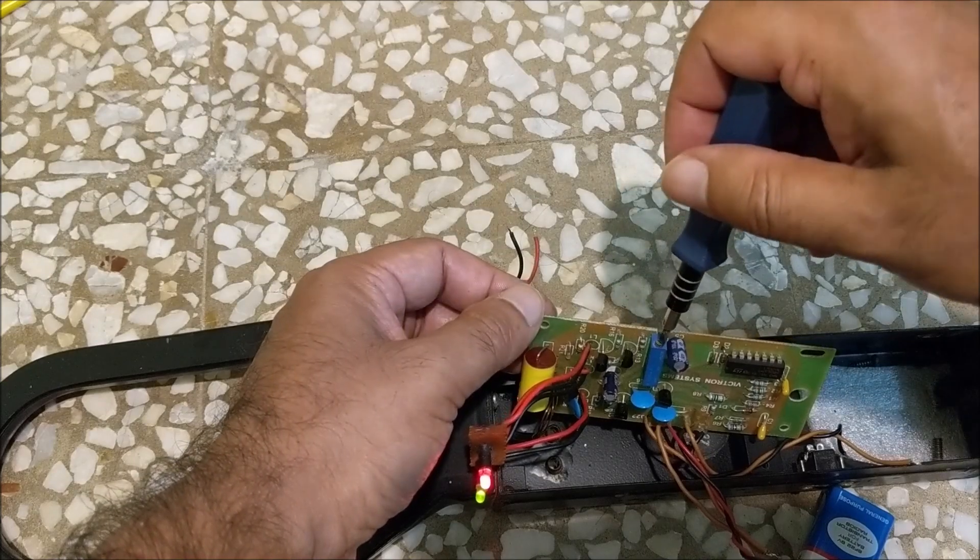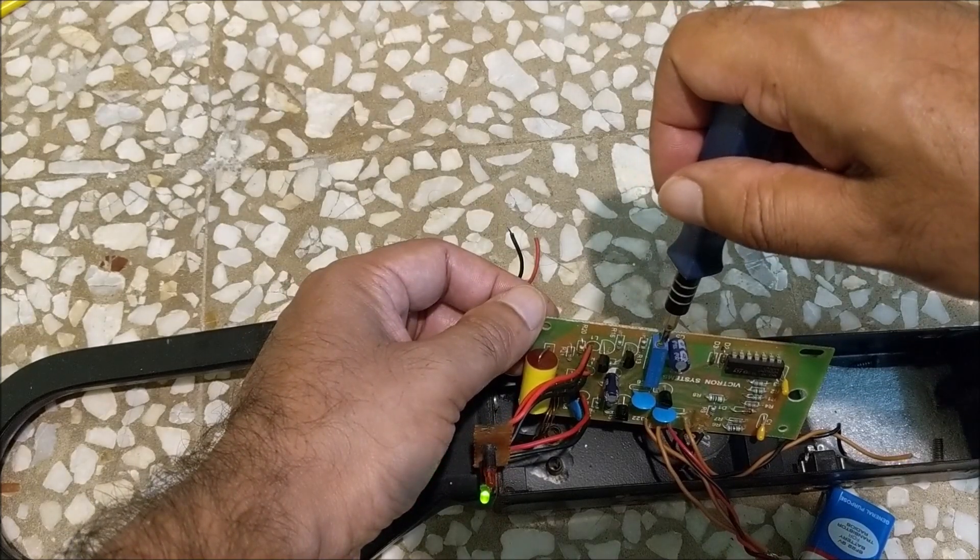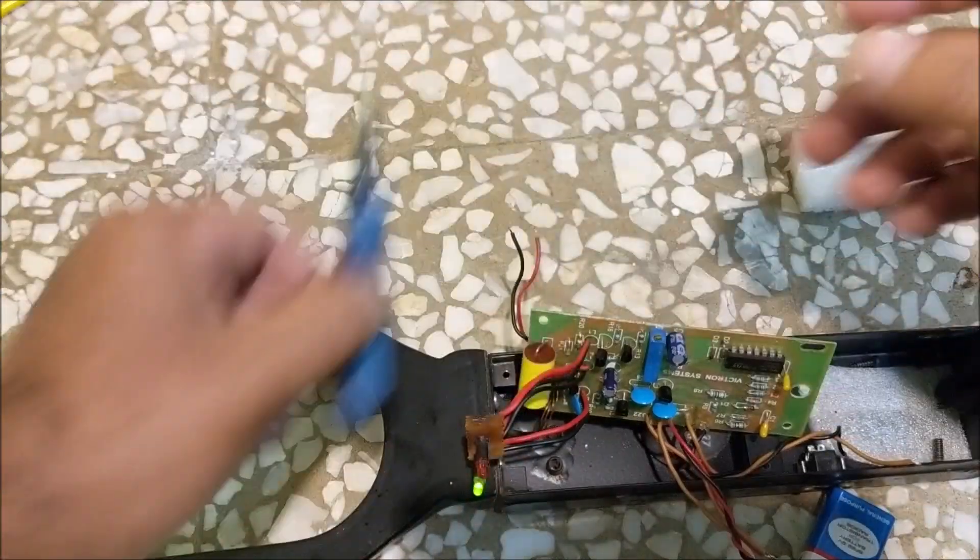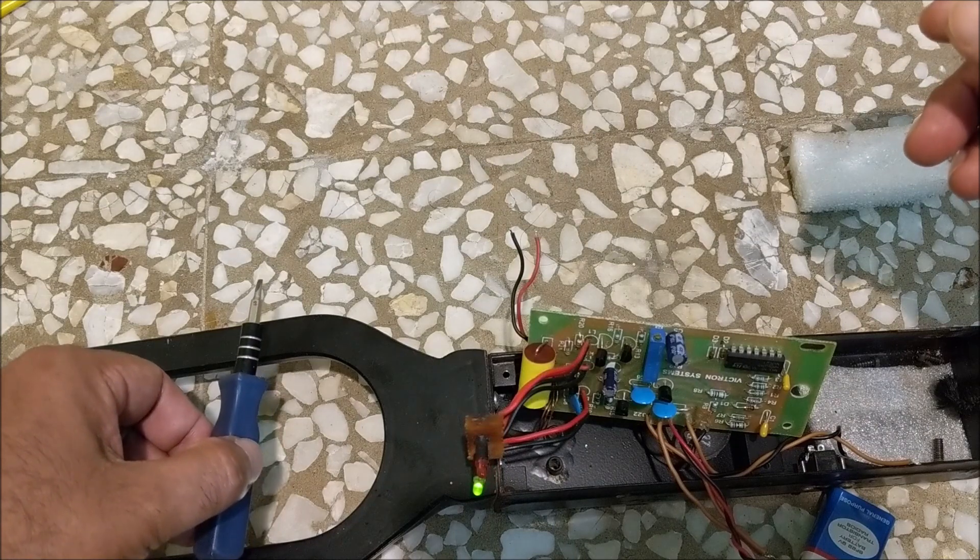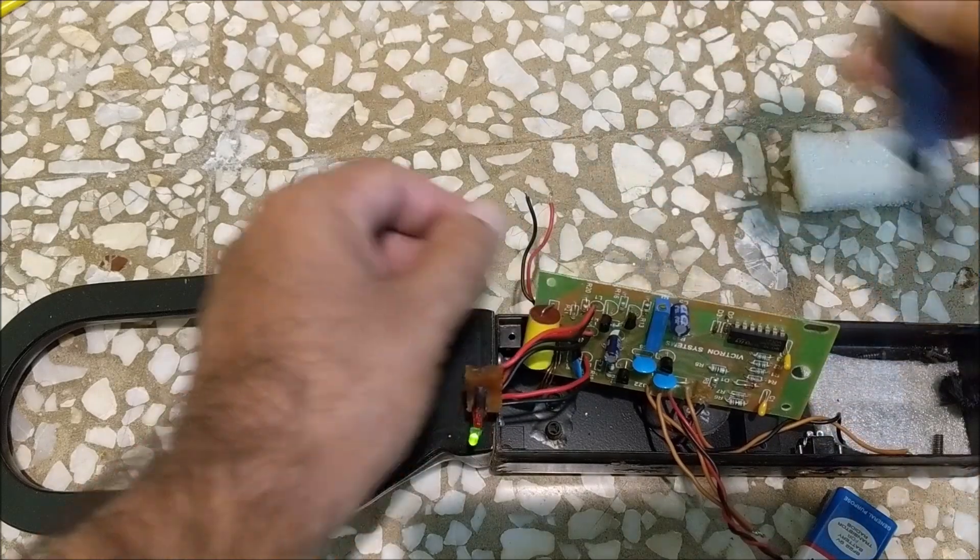You can see that the red LED is glowing continuously. Now adjust the preset so that the red LED just turns off. We can also adjust the sensitivity of this metal detector by this preset.